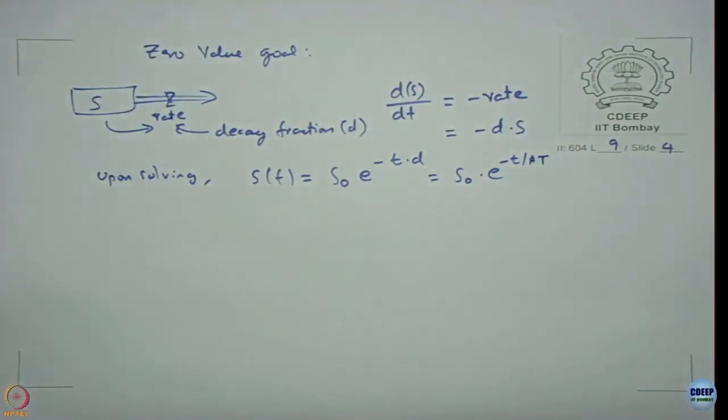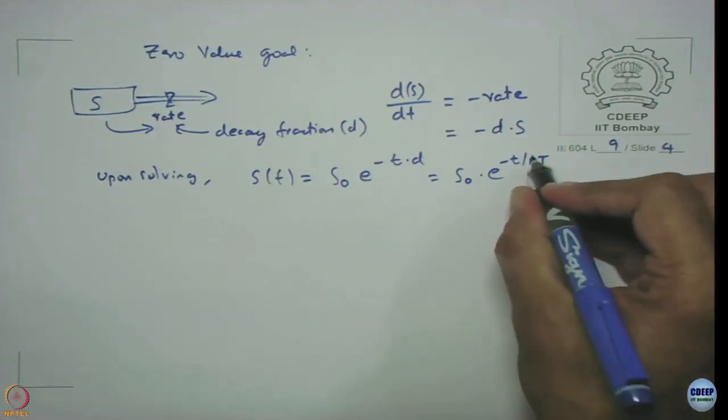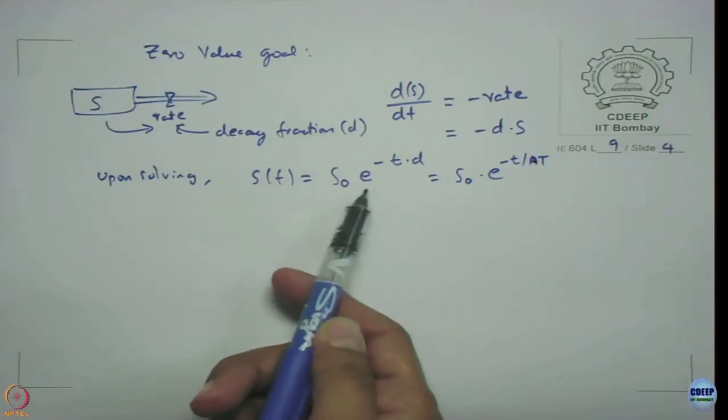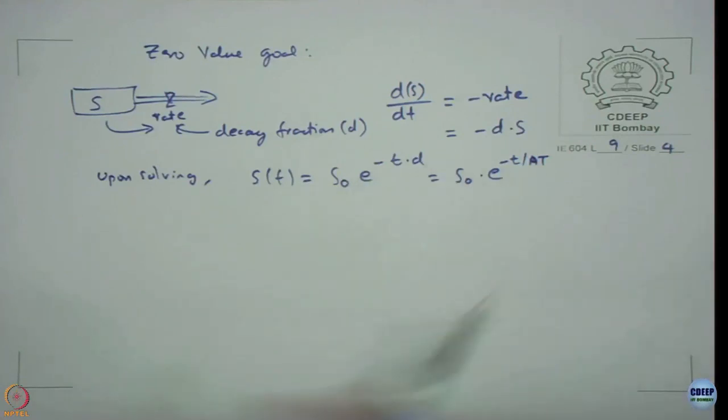AT again stands for adjustment time, which is just 1 over the fraction D. This curve, we need to get an expression e^(-x) so that we can get the curve, and the curve is similar to this.